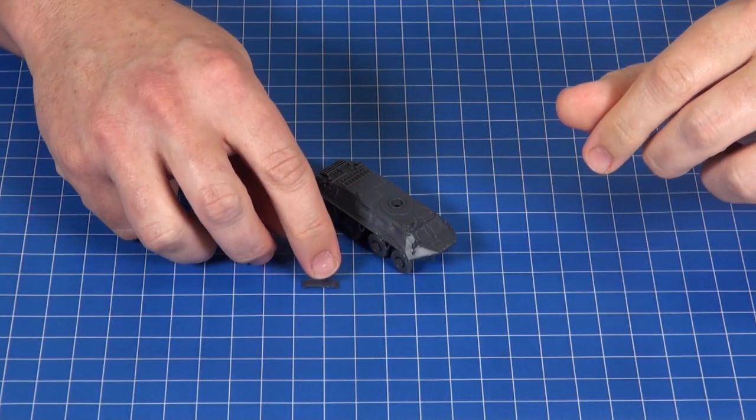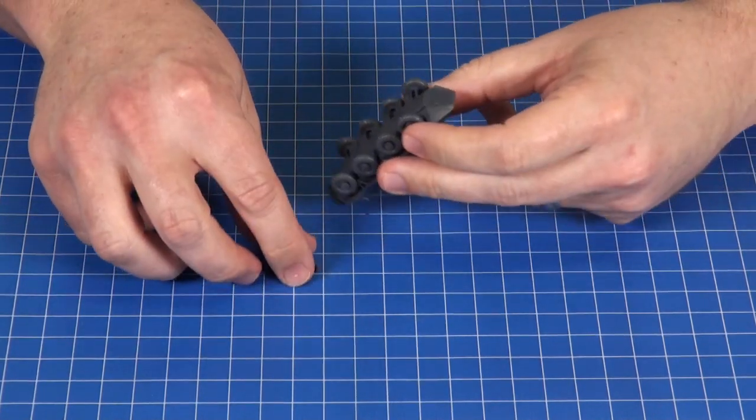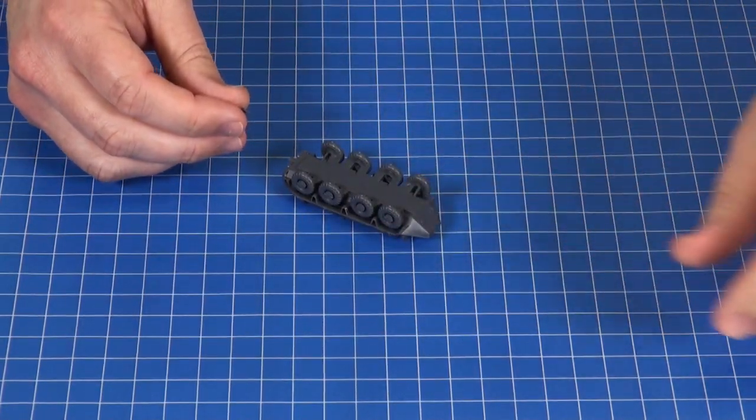Last but not least for the lower hull is the little flotation screen or breakwater. This goes on the underside of the front hull.